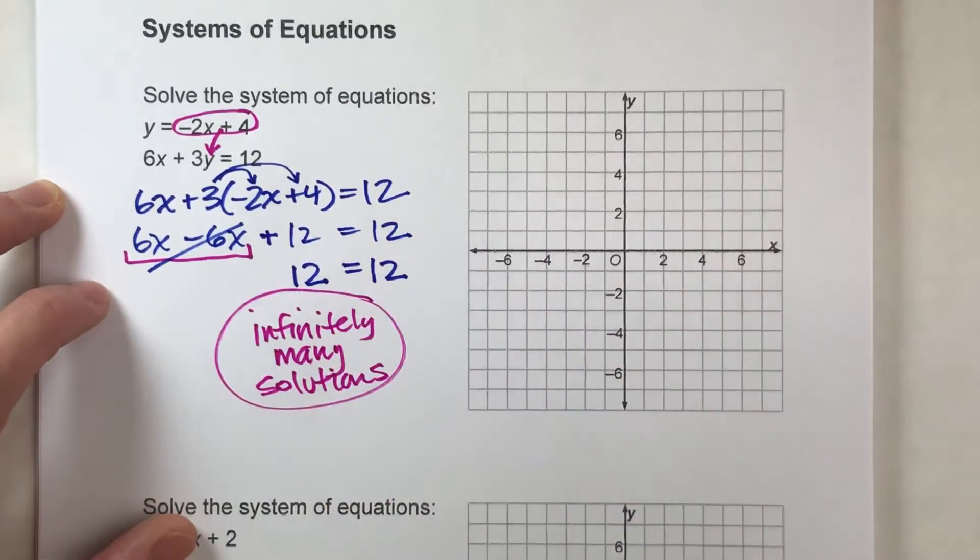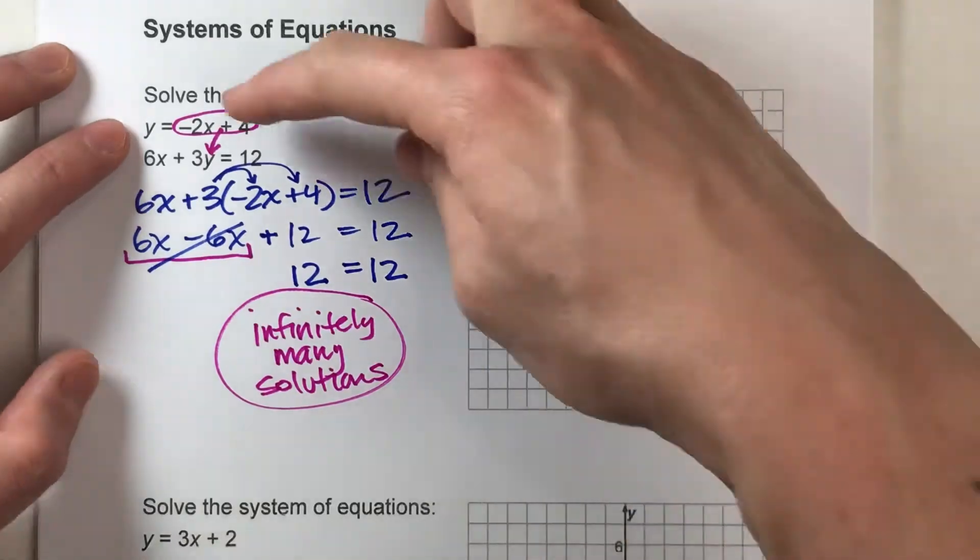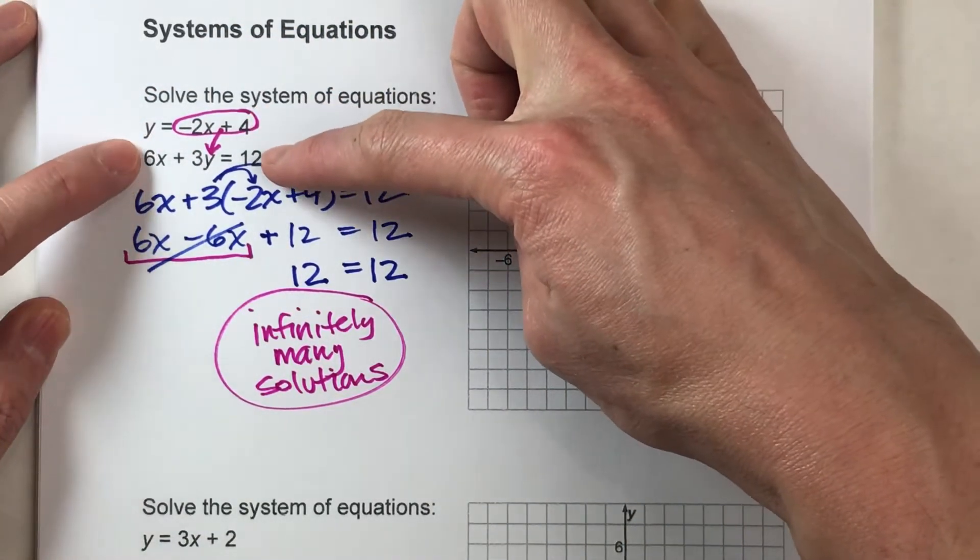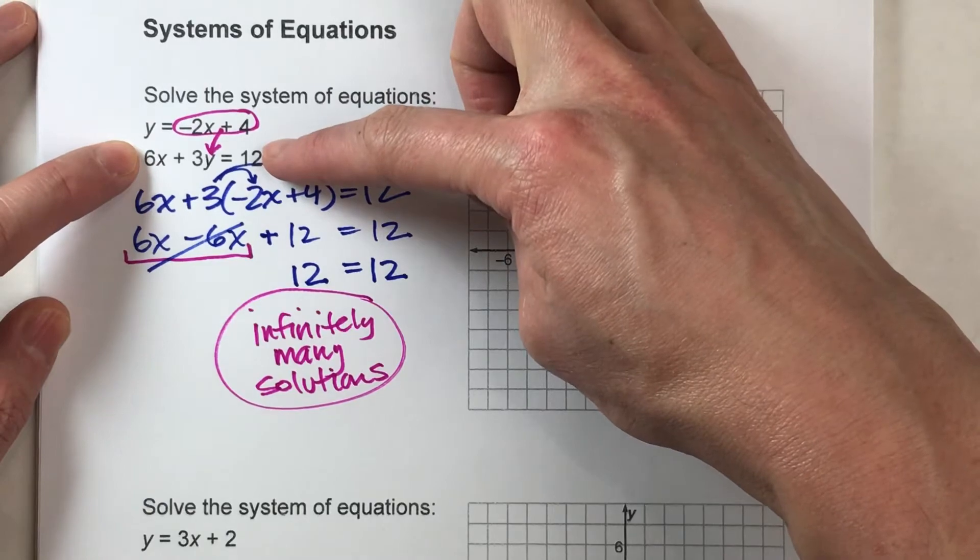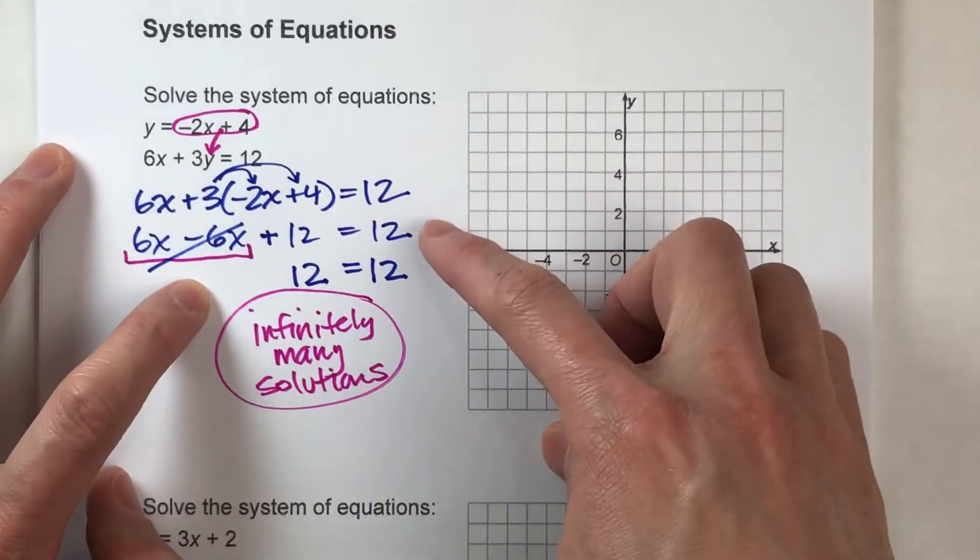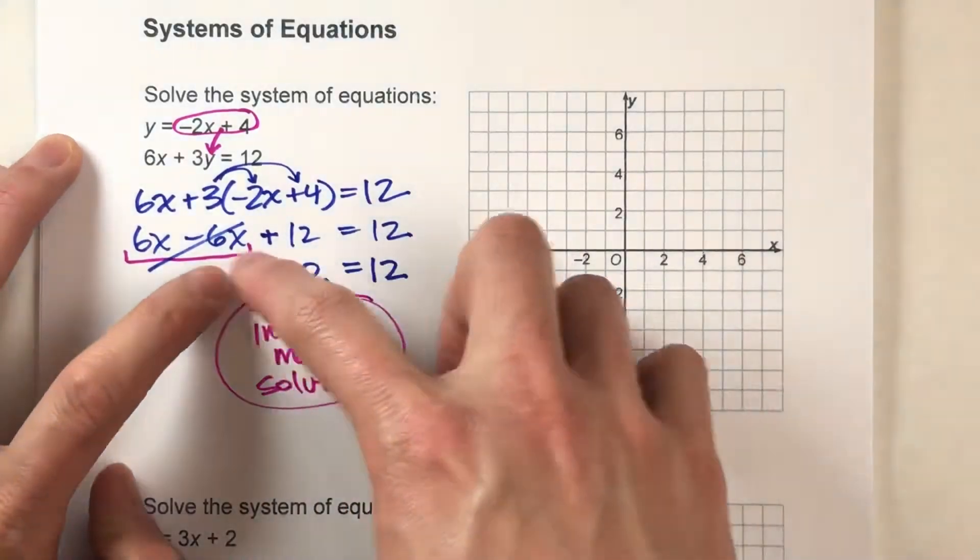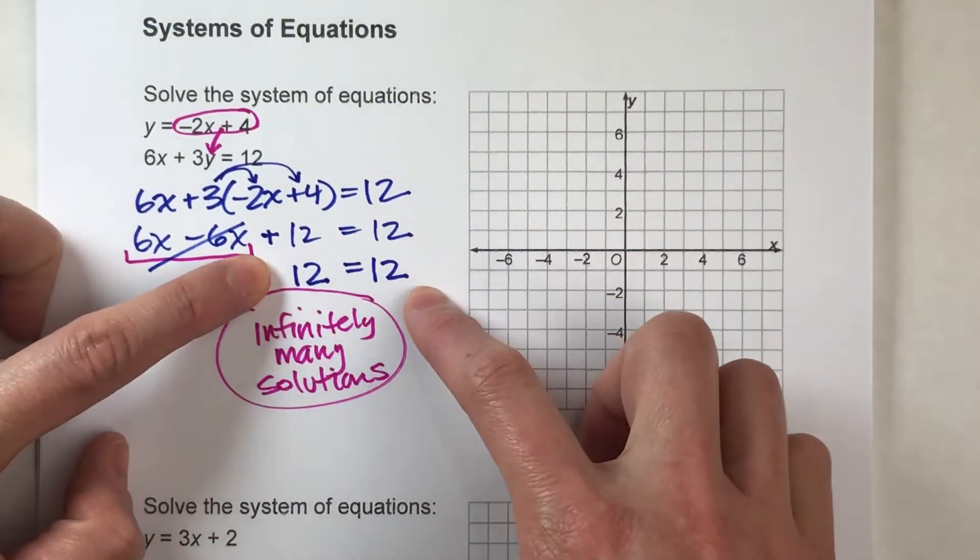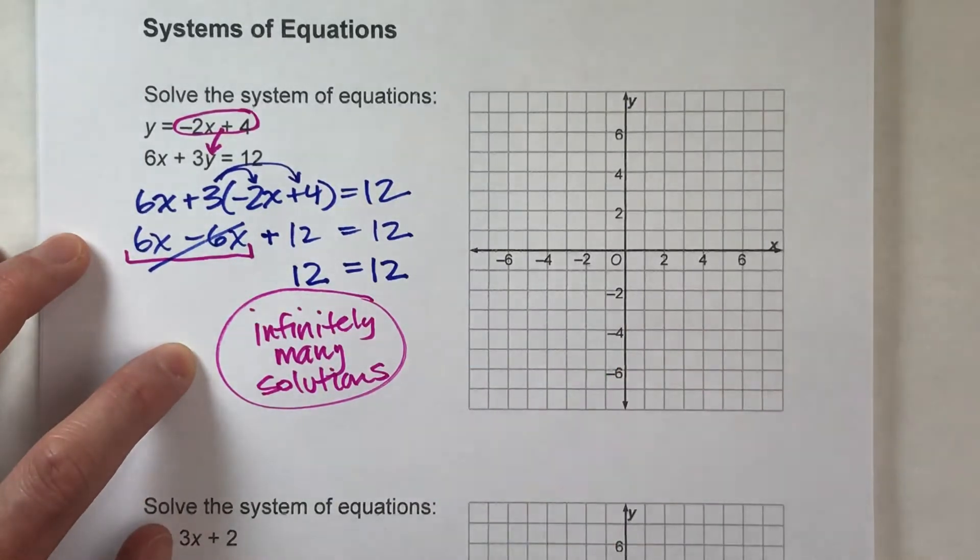What that means is, any combination of x and y that works in the first equation will also work in that second equation. So whenever you get an algebraic equation where you end up solving it and you get to a point where there's no variables and a number equals itself, that tells you there's infinitely many solutions.